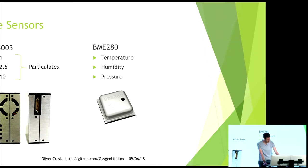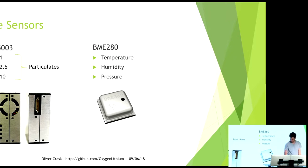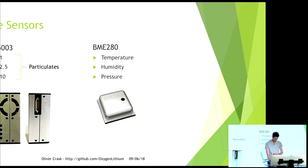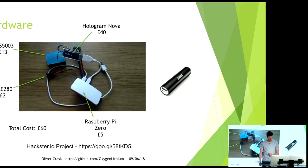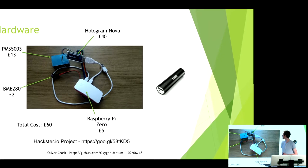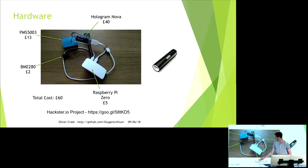So what am I using to do this? I've got a little device down here — just a few little bits and pieces. I've got two sensors: the PMS5003, which is measuring particulates, and the BME, which is just for temperature, humidity, and pressure readings. Here's the hardware — it's all based around the Raspberry Pi Zero, which is a low-cost board, using a Python program to collect data from the two sensors, and then transfer this over cellular using the Hologram Nova stick. It came to about £60.